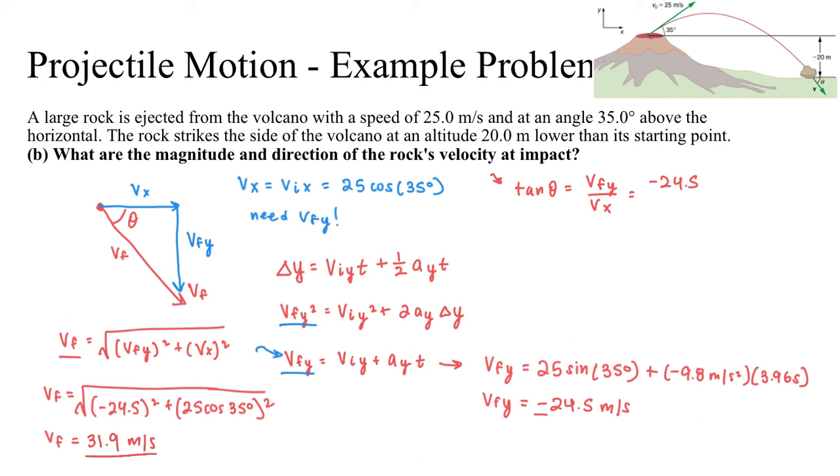Then I know that tangent of theta is going to be that v_fy over my v_x, which will be negative 24.5. And again, I'm going to omit the negative. Whenever you do the angle, just omit the negative. You've already captured that with the direction of the vector over my x, which is 25 cosine 35 degrees. So that theta is tangent inverse of this whole thing.